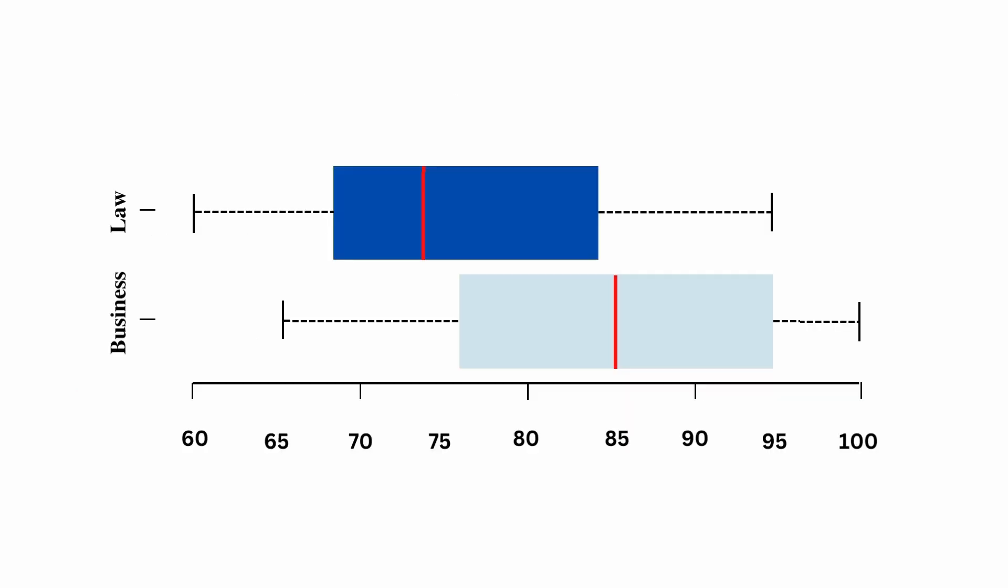From the box and whisker plot for law, the 75th percentile corresponds with the line on the right side of the box. The 75th percentile is also known as quartile 3. The estimated salary for the 75th percentile of law is 84,000 rand.